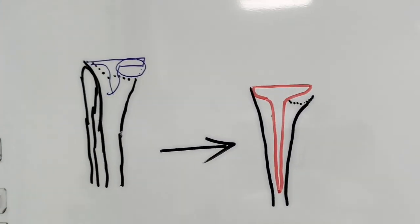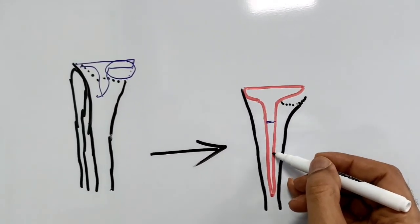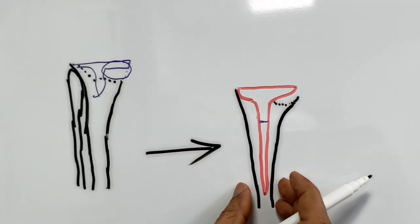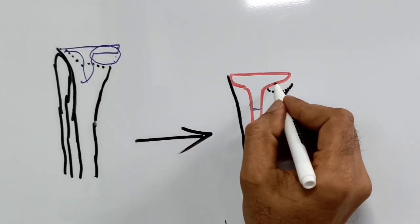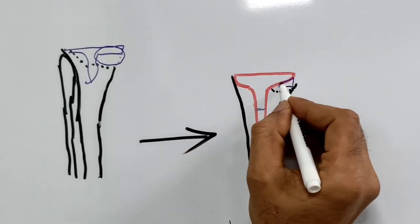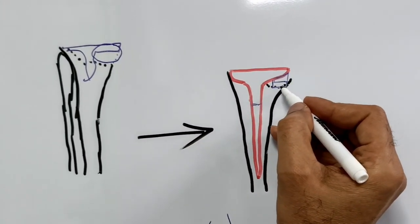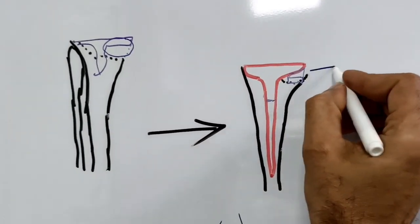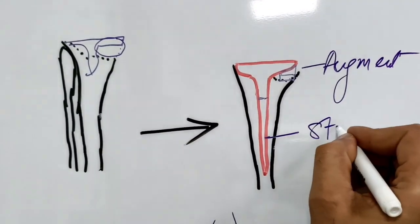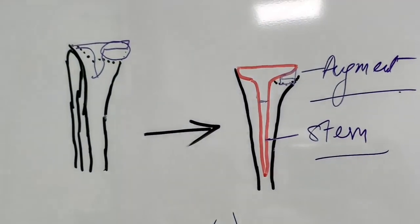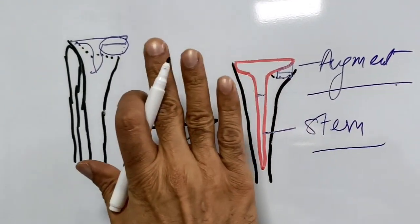What did we do? We used a long stem. We had a long stem to provide additional support. Plus, since the bone is missing here, we used an augment. We used an augment to fill that space. With the long stem and the augment together, we were able to provide proper support. The patient's pain will be resolved and everything will not hurt.